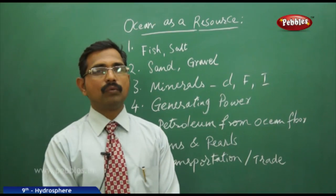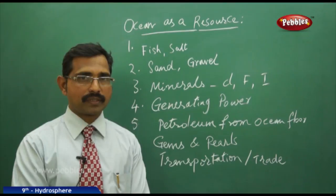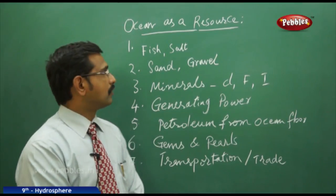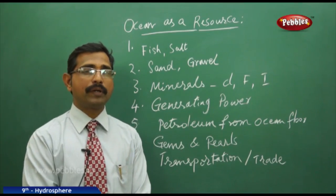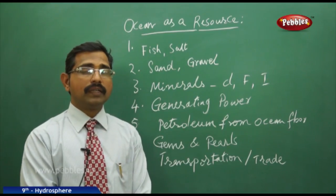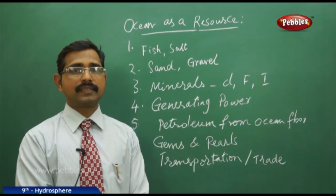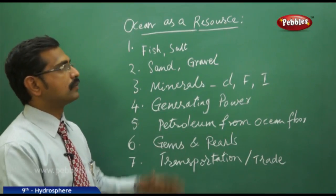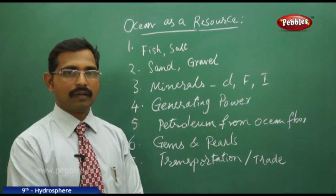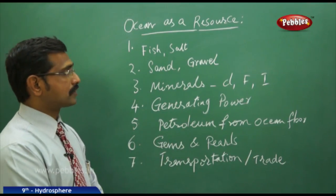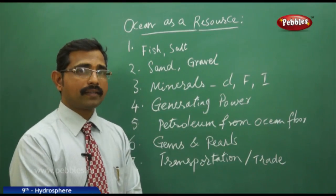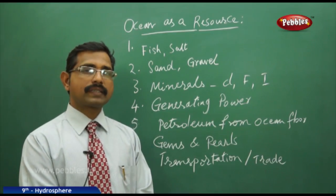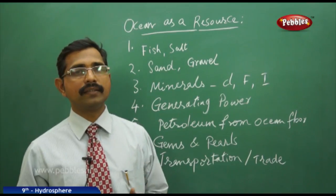Oceans are one of the most important sources for human beings. We have depended on them for food since ancient times, as most life on Earth is under the sea. We depend on oceans for fish and other food, for building materials like sand and gravel, and for minerals like chlorine, fluorine, and iodine used in industries.